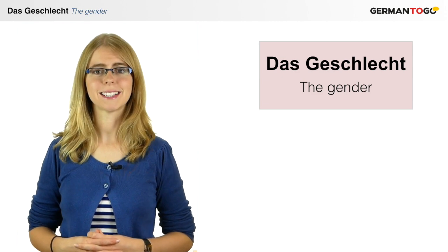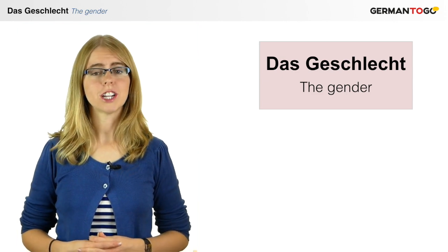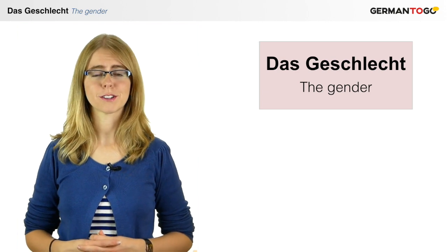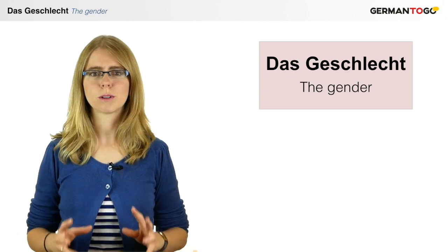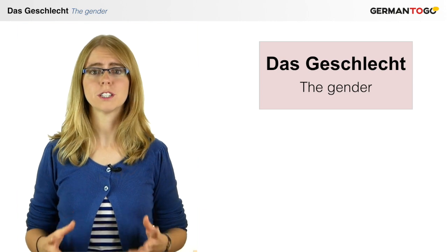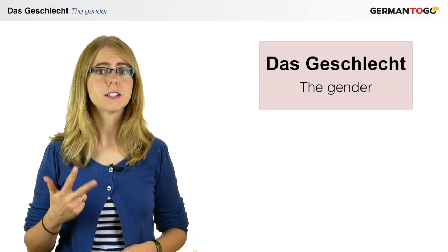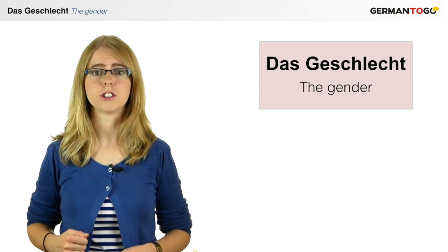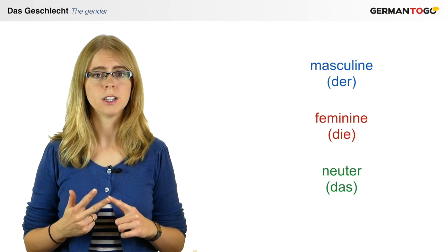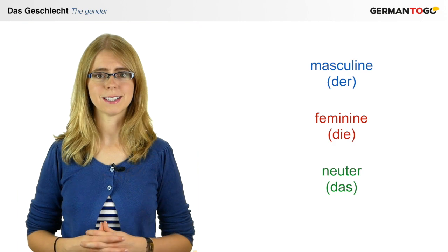Das Geschlecht — the gender. The gender is probably one of the most difficult aspects of the German language, and you will probably have some difficulties remembering what gender a noun belongs to. There are three different genders in German: masculine, feminine, and neuter. But here are a few rules which can help you with that.